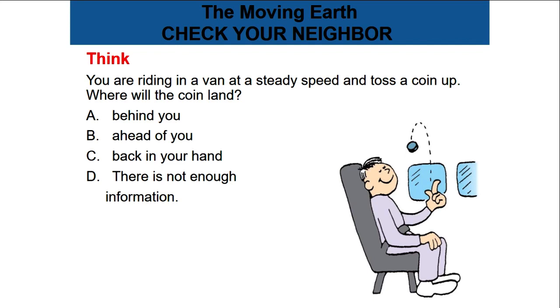If you are moving in a van, the van is moving at a steady speed, so you are also moving with the van, same speed, and so is the coin. Now, once you toss the coin up, the coin will keep moving also with the van and with you. So it will come back in your hand. So the answer is C.